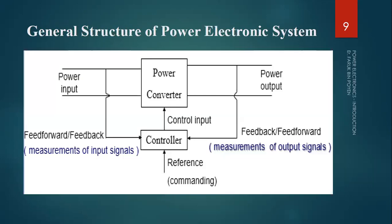Now the general structure of power electronics. The first important thing is the feedback. Looking at this generalized diagram: there is power input and power output, and there is one controller. The controller acts as a commanding unit — it gives commands to the input devices. The main important circuitry is the power converter. You give the input to the power converter and it gives the desired output by converting from one form to another form.